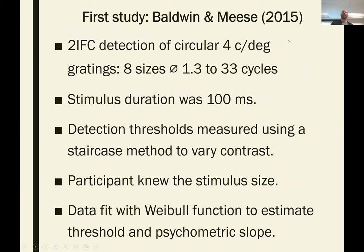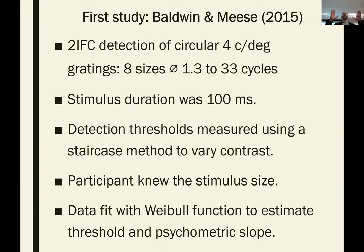For the first study, we used a two-interval forced-choice detection task — as I described, one beep then another beep, and in time with one of them a grating is shown. We used a four cycles-per-degree grating in eight sizes from 1.3 grating periods in diameter all the way up to 33 grating periods in diameter, shown for 100 milliseconds, measuring detection thresholds using a staircase to vary contrast. Importantly, participants knew the size they were expecting in each sequence, so they weren't uncertain about how much of the screen the stimulus would occupy.